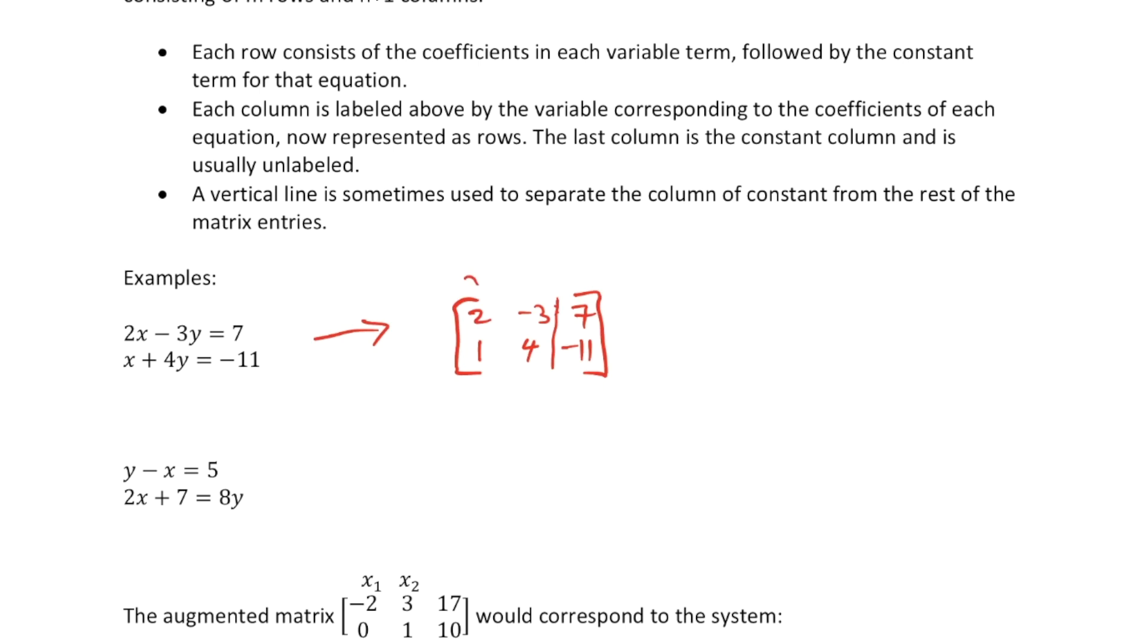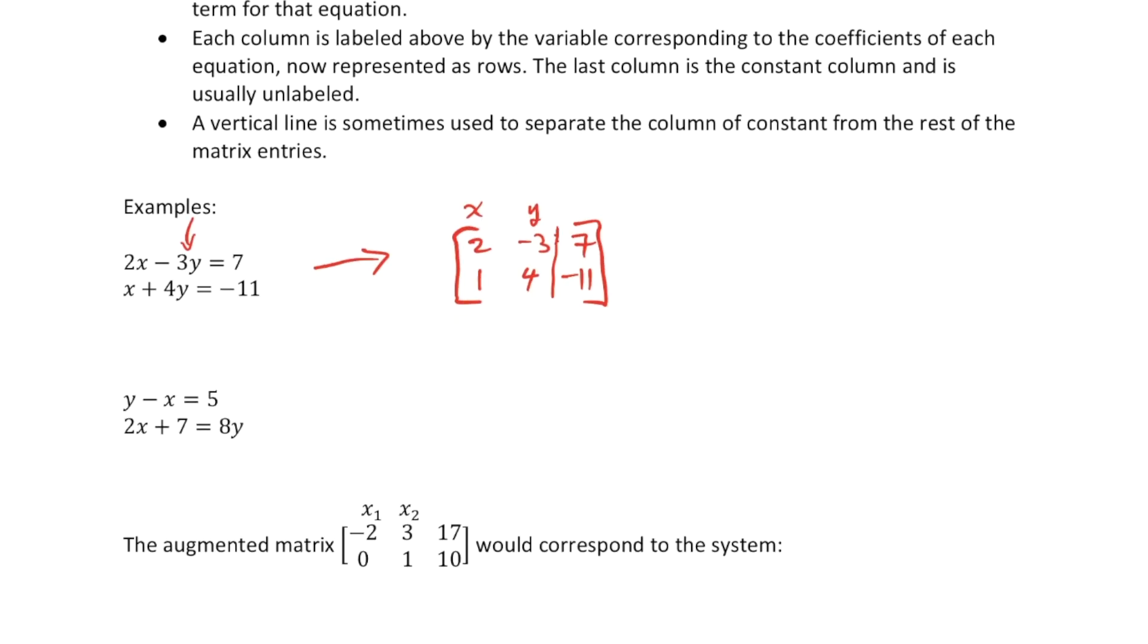What often happens here, at least in the beginning and at the end of a problem, you will label the column corresponding to those particular coefficients. So you see the 2 and the 1 are the x coefficients, so I label the first column with x. The negative 3 and 4 are coefficients corresponding to y in that system there, so I have that as the y column.